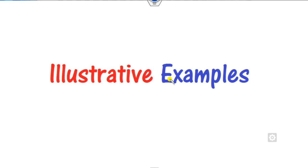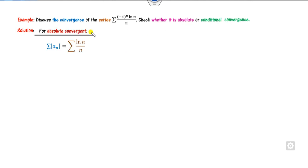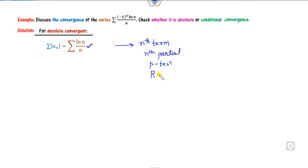This is the summary applicable to all examples. Let's discuss 15 to 17 examples. Here this is an alternating series, so we consider absolute and conditional convergence. We start with the absolute value, which is ln(n)/n. You can apply the nth term test, nth partial sum, p-test, ratio test, root test, or geometric series test — any applicable test. We know that ln(n)/n is always greater than 1/n.